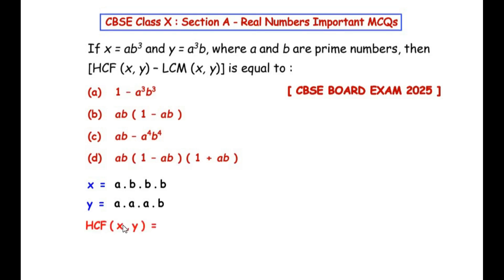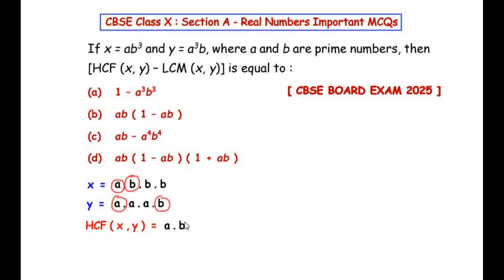The HCF of x and y is going to be the common factors which are present in both x and y. We can see that a is a common factor present in both x and y, and there is one b which is present in both. So b is present in x and b is present in y. Therefore the HCF becomes a times b.